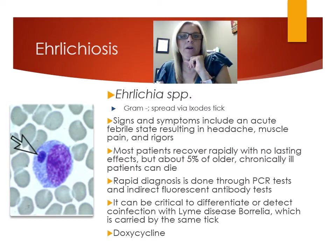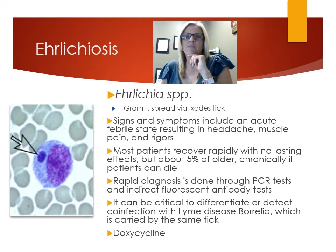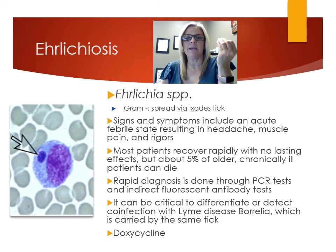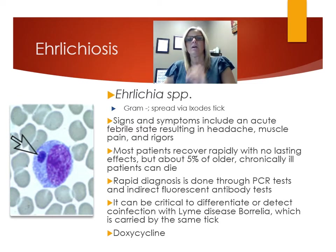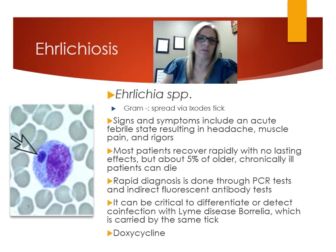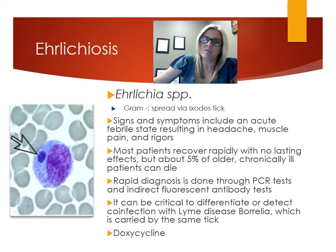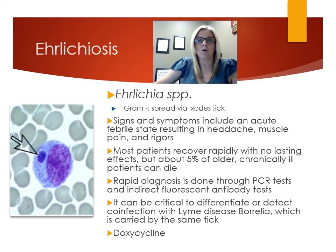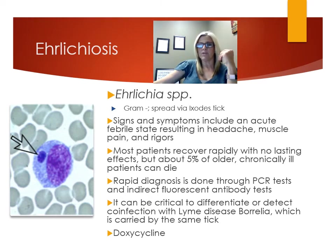Ehrlichiosis is caused by Ehrlichia species — a gram-negative, small intracellular bacterium with a strict parasitic existence, spread via the Ixodes tick. Symptoms include acute fever, headache, and muscle pain. Most patients recover with no lasting effects, but about 5% of vulnerable populations — older or chronically ill patients — can die. Diagnosis uses PCR and antibody tests, and it can be difficult to differentiate from Lyme disease, as co-infections are sometimes found. Treatment is doxycycline, which clears most infections within about a week.